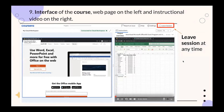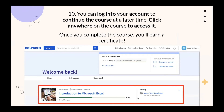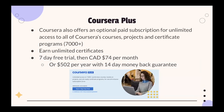This is the course interface. When you click on it, there's a video playing with instructions and a cloud workspace. You can log into your account to continue the course at a later time. Once you complete the course, you'll earn a certificate. There's also Coursera Plus — an optional paid subscription for unlimited access to all courses, projects, and certificate programs (7,000+), with a seven-day free trial, then $74 CAD per month or $502 per year with a 14-day money-back guarantee.